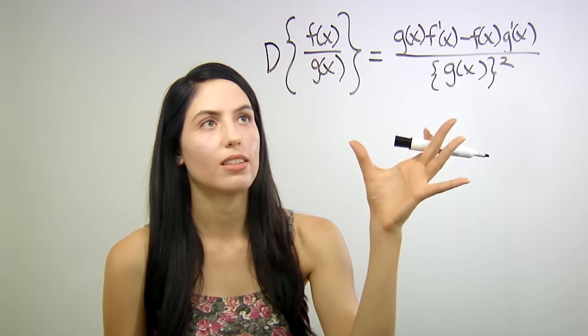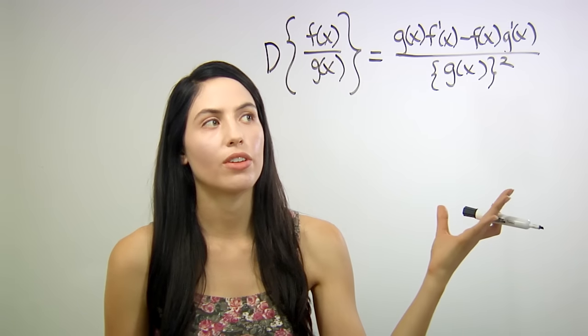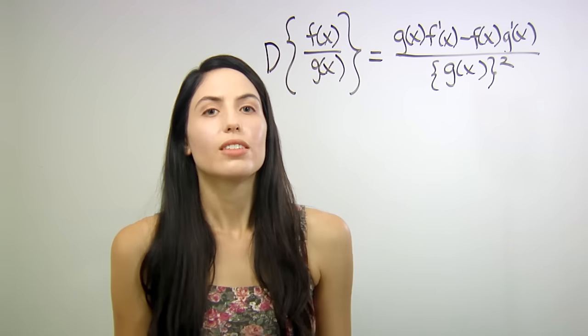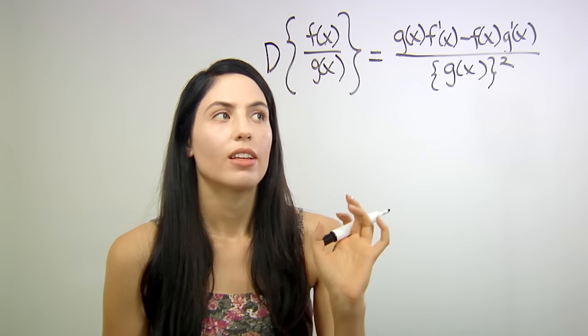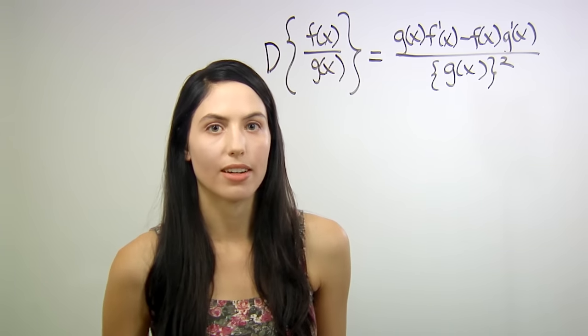So this mess is the formal definition of the quotient rule. I don't know about you, but this is hard to remember. Let me show you a way that makes it a lot easier.